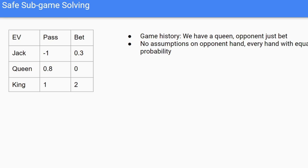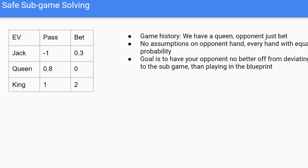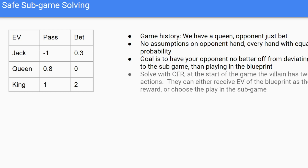In safe subgame solving, we make no assumptions on the opponent's hand — every single hand is played with equal probability. The goal is to ensure the opponent is no better off deviating to the subgame than playing the blueprint. The key idea is that we're safe in our blueprint: we know we're not going to lose on expectation, so we won't be exploited in an unabstracted subgame. At the start of every game, the opponent has two actions: receive a reward (the expected value calculated in the blueprint), or choose to play into the subgame.